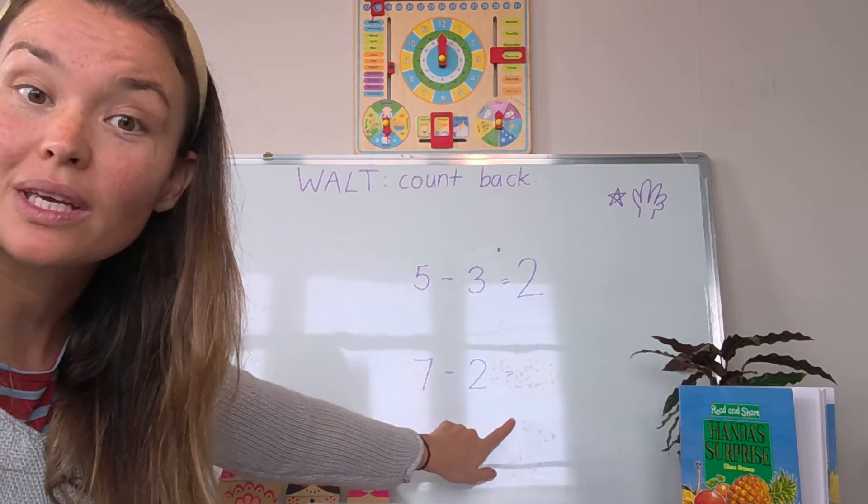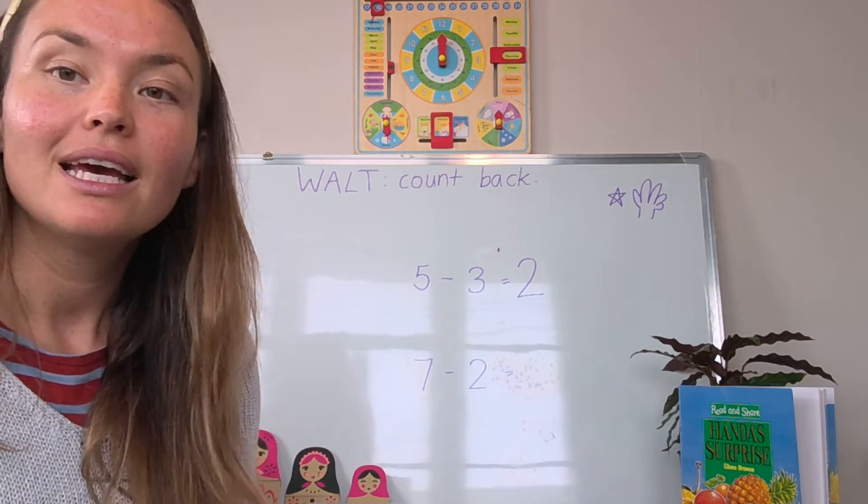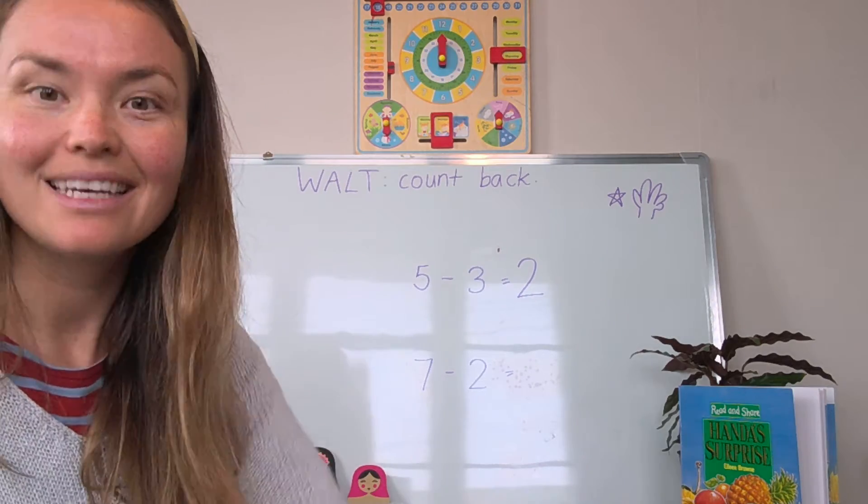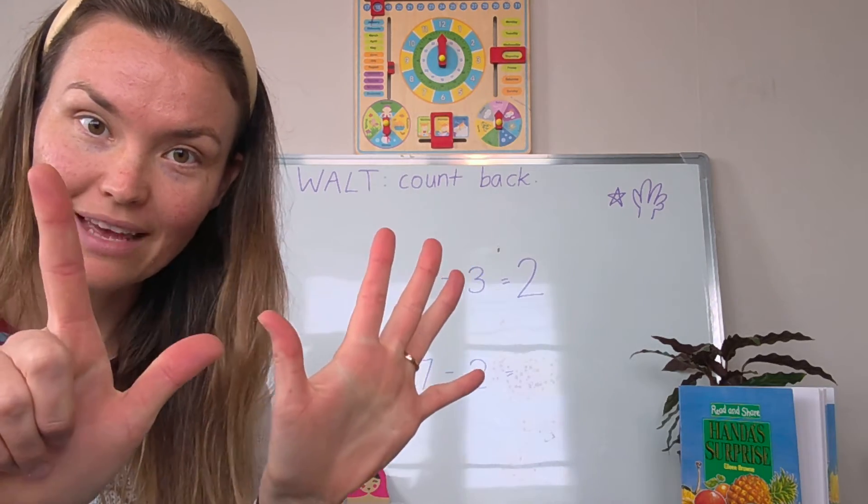Seven take away two equals. Let's make the larger number. I'm sure you know which one that is. Let's make seven on our fingers. Seven.